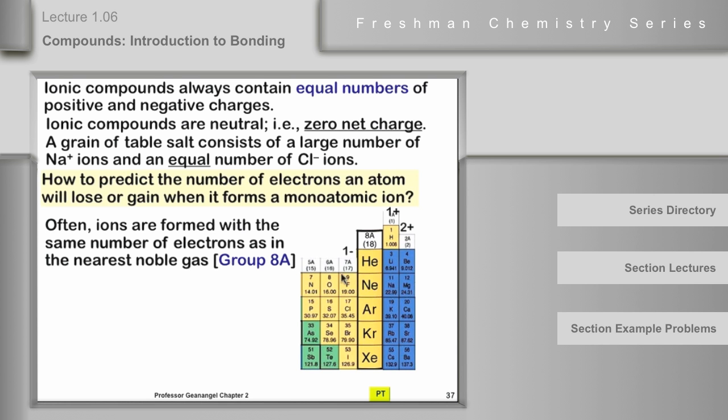Oxygen is two steps away from neon, so it will form an ion with two negative charges. And nitrogen is three steps away, so it will form an ion with three negative charges. Now you don't go much beyond there because plus three or minus three is about as large a charge as an ion can have and be stable. So you don't have to worry too much about anything outside of minus three or plus three.